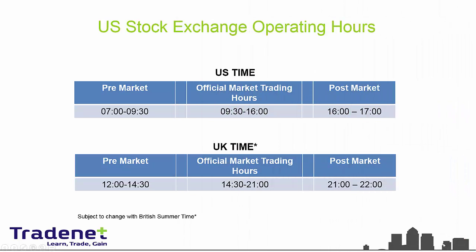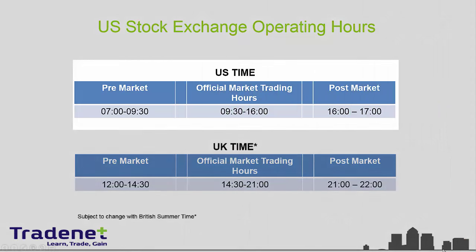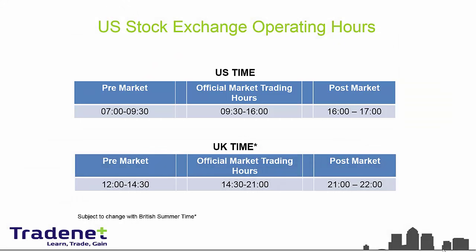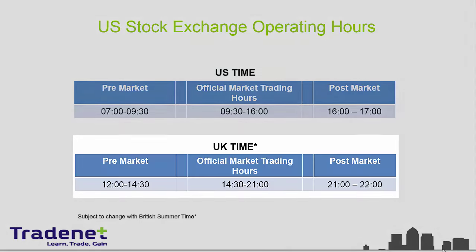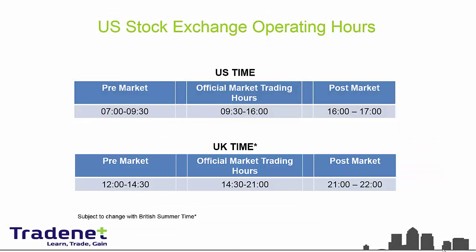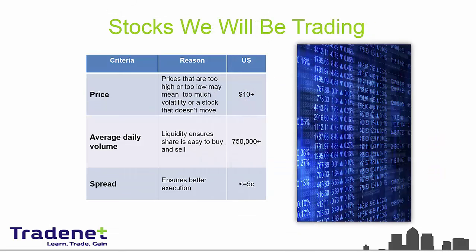Let's talk about the official market trading hours. In the US, it is 9:30 AM Eastern time until 4 PM Eastern. There is a pre-market session and a post-market session, which we never trade because the volume is relatively low. However, if you live in the UK, then the official market trading hours at your time will be 2:30 PM until 9 PM.